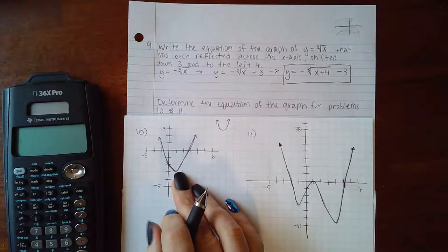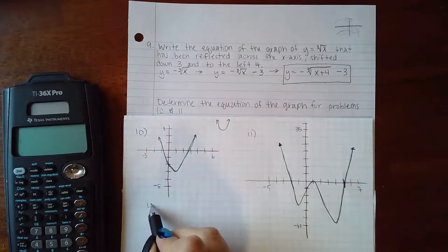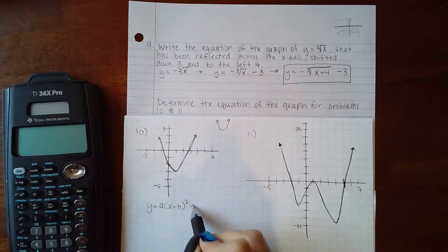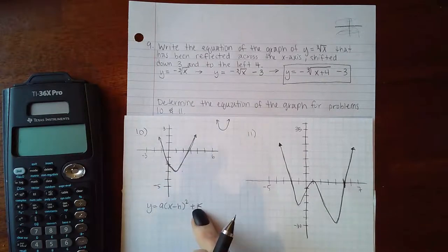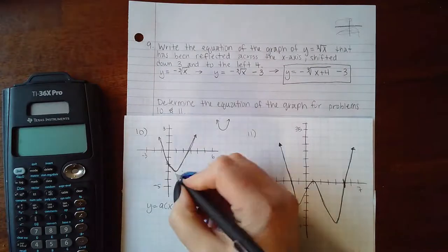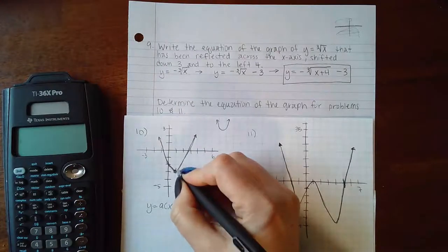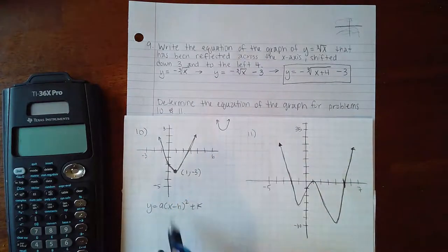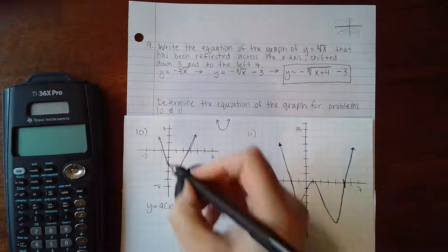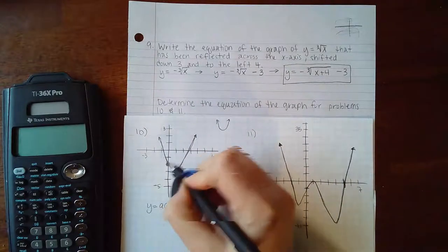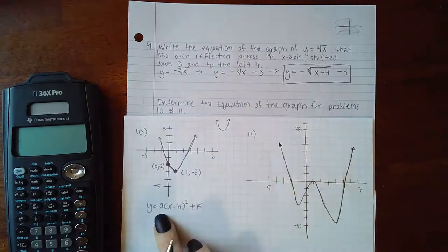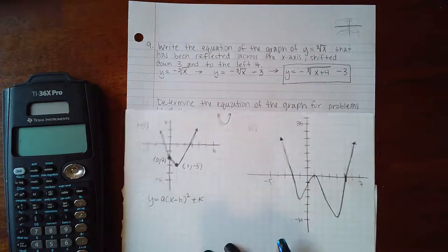I know the equation of a parabola fits this form where h, k are the coordinates of the vertex. The coordinates of my vertex here happen to be 1 and negative 3, and then I need another point like 0 and negative 2 to figure out what that coefficient would be.